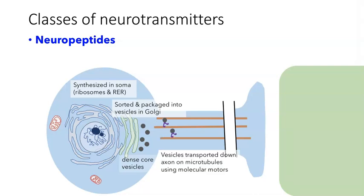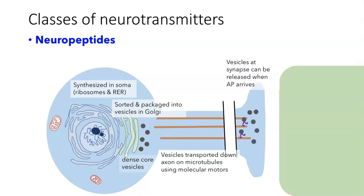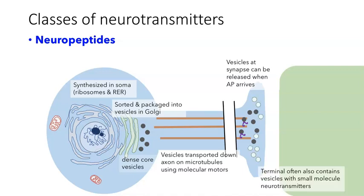These densely packed vesicles are called dense core vesicles, and they need to be transported to the actual site of release. This process involves molecular motors and microtubules; they have to be walked all the way down to the nerve terminal, where they'll be available for release when an action potential arrives. Most neurons that release peptide transmitters also contain a co-transmitter, so there are also vesicles that contain a small classic neurotransmitter. These vesicles look different — they tend to be clear and are not as densely packaged.